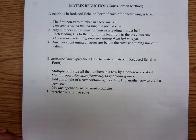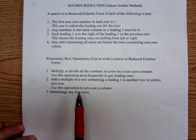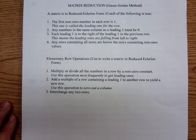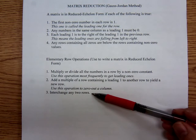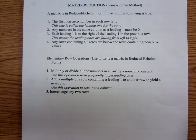That second operation is what we use to get zeros. The third operation: you can interchange any two rows, just like you could interchange any two equations. The order in which the equations are written doesn't impact the final solution — likewise, the order of which the rows are written doesn't impact the solution. I would use this one to get zeros down at the bottom, or if you see a one below before you're trying to get a leading one, you could try interchanging.